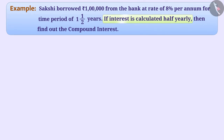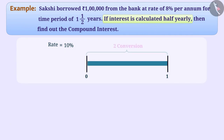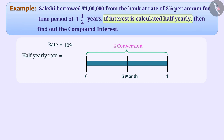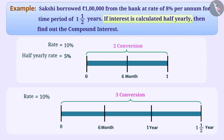When interest is compounded half yearly, there are two conversion periods each half year in a full year. In such a situation, the half yearly rate is half the annual rate. Here there will be three conversion periods in one and a half years, and the half yearly rate will be 8% divided by 2, which is equal to 4%.